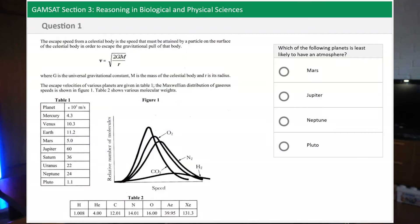Now here we have a typical Section 3 question and we've got three main parts: the stimulus, the question stem, and the answer options.